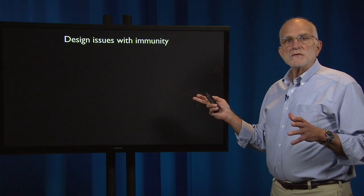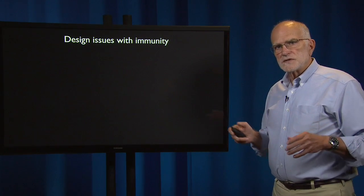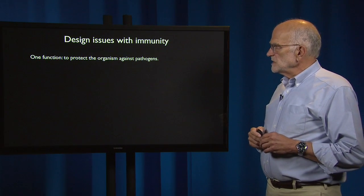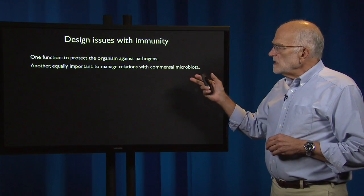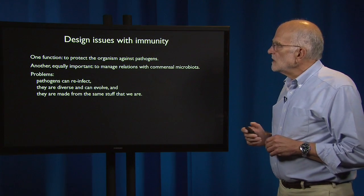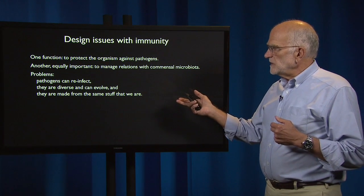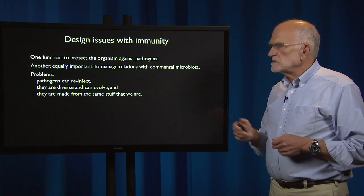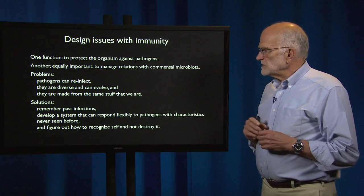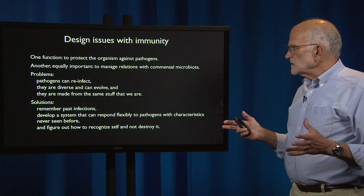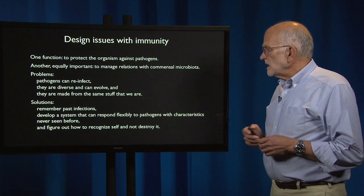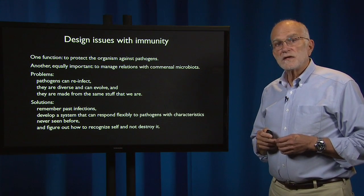There are some design issues involved in thinking about how evolution has constructed the immune system. One of its functions is to protect the organism against pathogens. Another, equally important, is to manage relationships with commensal microbiota. The problems are that pathogens can reinfect, they are diverse and they can evolve, and they're made from the same stuff that we are. The solutions are to remember past infections, to develop a system that can respond flexibly to pathogens with characteristics that have never been seen before, and to figure out how to recognize self and not destroy self.